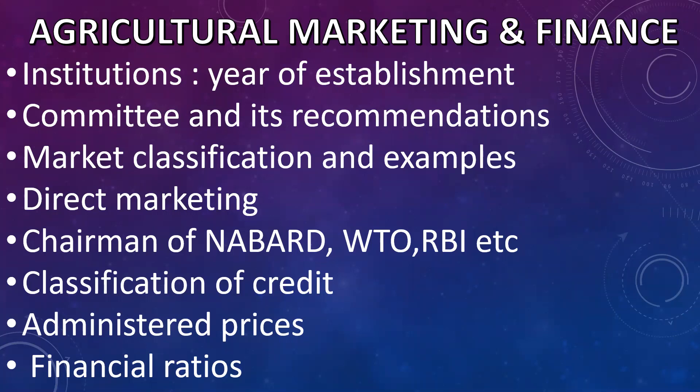Then direct marketing — like Apna Mandi is followed in Punjab, so which type of direct marketing is followed in which state. Also, chairman of NABARD, WTO, RBI, and the revised RBI rates — I have covered this in one of the agriculture finance parts, just go through it. Then classification of credit — based on security, term, and contact with farmers. Then administered prices: MSP, procurement price, issue price. Lastly, financial ratios — liquid asset ratio, solvency ratio, liquidity ratios — have a look at the formulas.